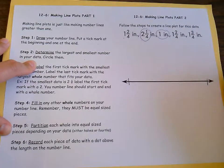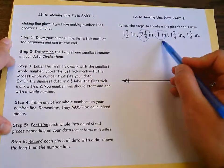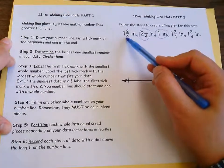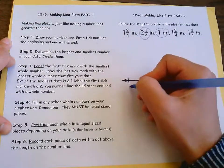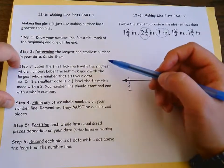So now I want to label the first tick mark with the smallest whole number. So in this case it is one. If this were my smallest data point, I'd want one whole, so I always want to start and end at a whole. So I'm going to put one right here.